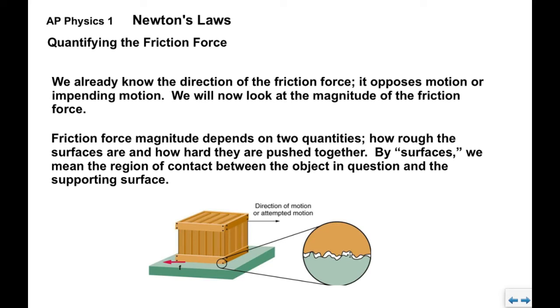And those irregularities sort of butt up against each other and resist the relative motion. So the box wants to move to the right. This floor is going to oppose it, and these little points of contact are going to provide a force in the opposite direction, FF. How rough the surface is obviously is going to impact the magnitude of this friction force. We have a way to quantify that that we'll look at shortly.